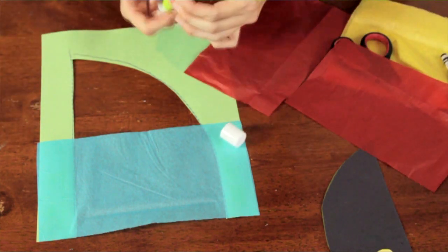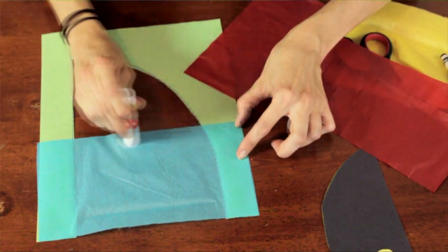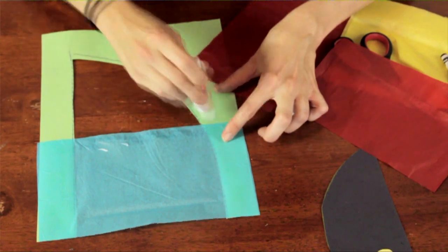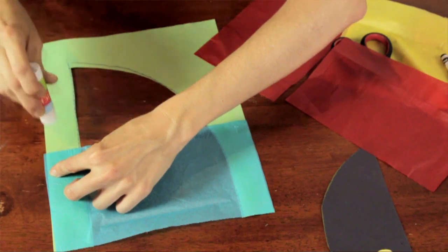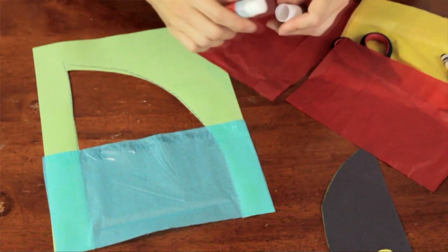Now let's give a little line of glue here. And we'll move on to our red. And you can overlap them.